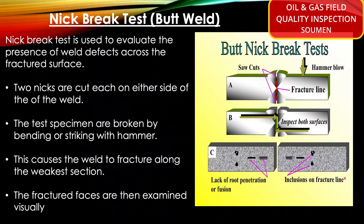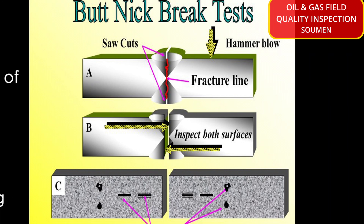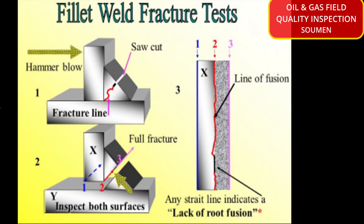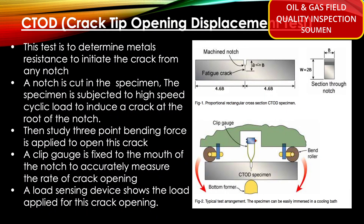The nick break test can be done for butt welds as well as fillet welds. It is used to evaluate the presence of weld defects across the fracture surface. Two nicks (notches) are cut on each side of the weld test specimen, and the specimen is broken by bending or striking with a hammer, causing the weld to fracture along the weakest section. The fracture faces are then examined visually. For fillet welds, a saw cut is made along the center line of the weld face, the specimen is broken by hammer strikes, and then the fracture surface is assessed. This is a very popular test for qualifying structural welders for fillet welding.